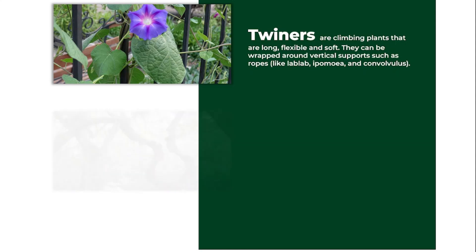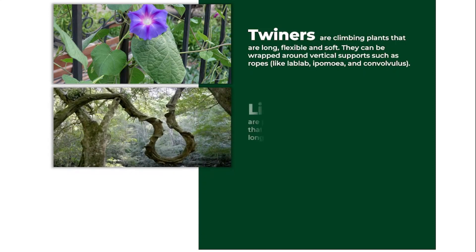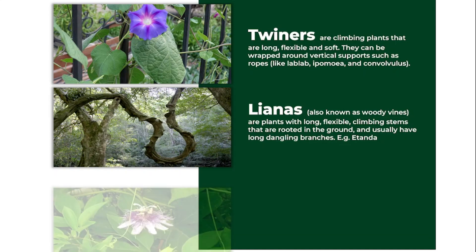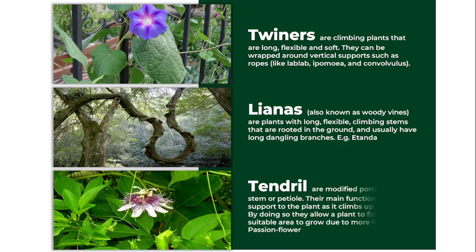Then we have the lianas. These are plants that are woody — they are usually rope-like but are very woody. A very good example is the Entada, and these plant structures are found in the forest.